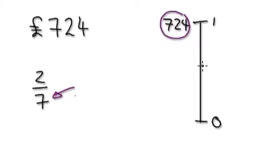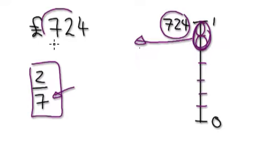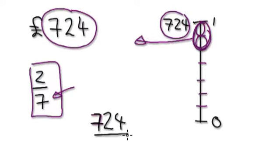What you do is divide your whole amount into seven parts. So: one, two, three, four, five, six, seven — I've got seven parts there. You're giving two sevenths to charity, so that's one part, two parts — basically you're giving away this amount. So to find out how much you're giving to charity, get your whole amount, divide it into seven parts, then times by two parts.